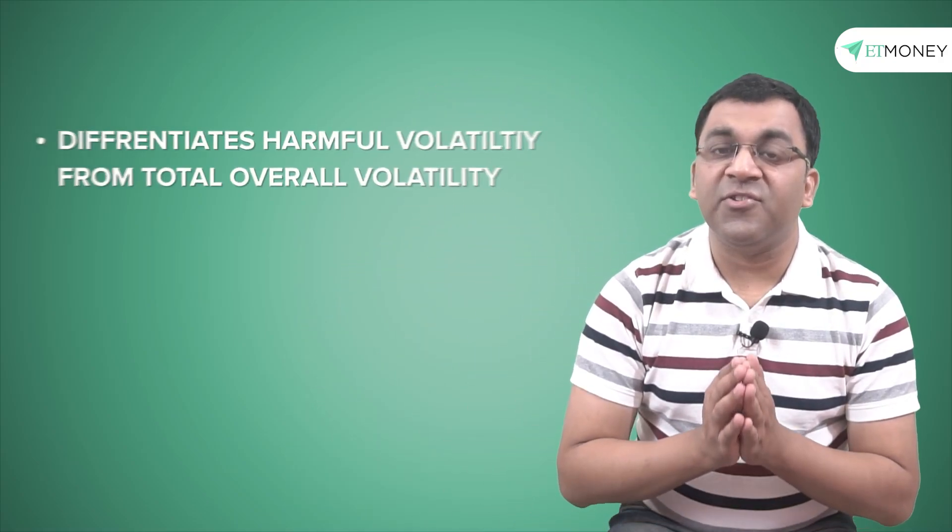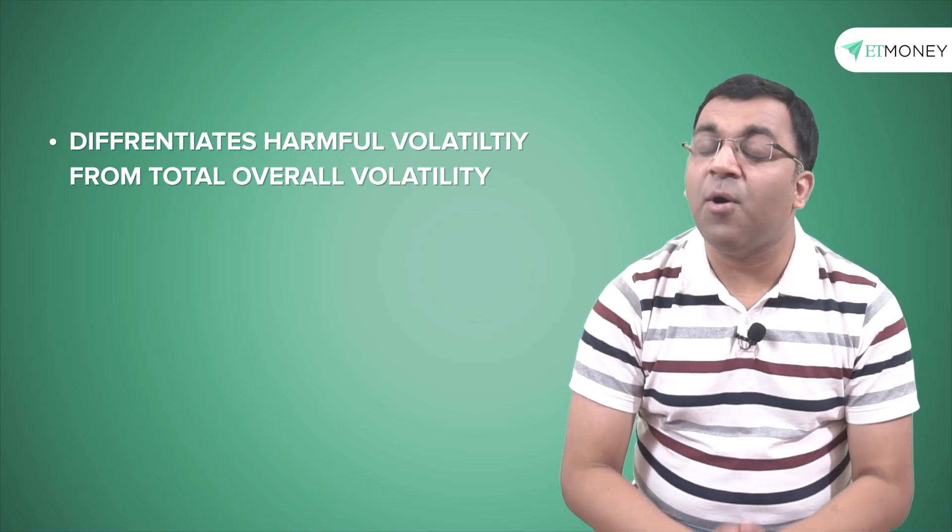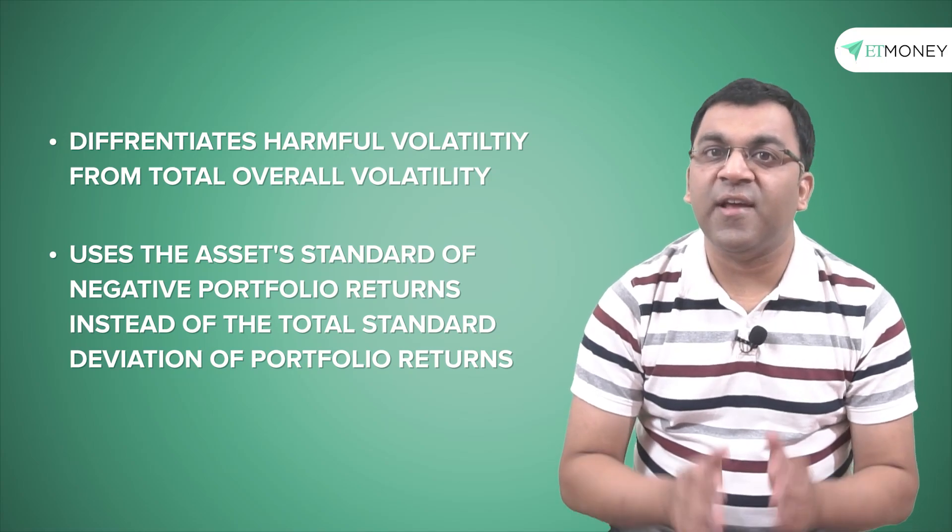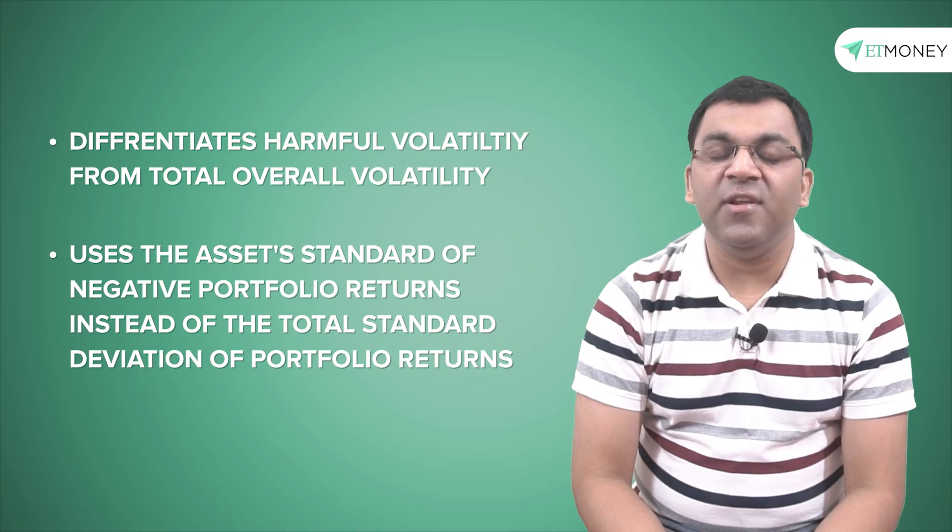We discussed earlier that not all volatility is bad. After all, while we don't like it when performance goes south, nevertheless we really don't mind it if the returns move in an upward direction. Now do recall that the Sharpe ratio uses the total volatility in its calculations in the form of standard deviation. This is where the Sortino ratio is different, as it only uses the fund's downside standard deviation in its calculations.